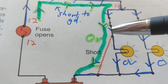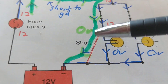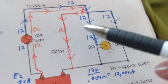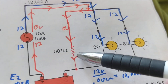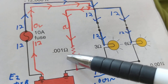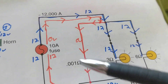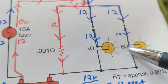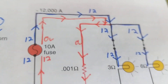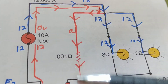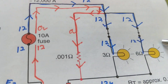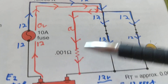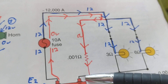Now consider this example: instead of a direct jumper, there's a resistor with a very low resistance — one thousandth of an ohm (0.001 Ω). If the normal load paths are 3 ohms and 6 ohms, current will flow through the 0.001 Ω resistor — it has far less resistance than the others. This is still a short to ground — the path with the least resistance.